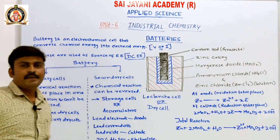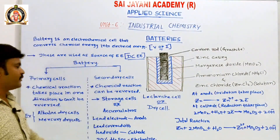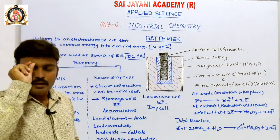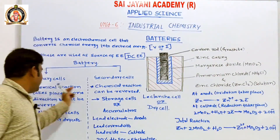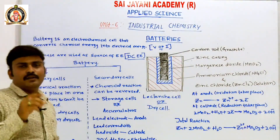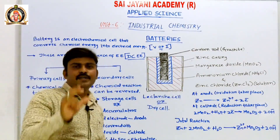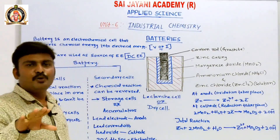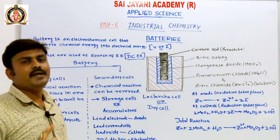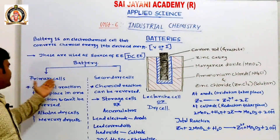Batteries can be classified into primary cells and secondary cells. In primary cells, the chemical reaction takes place in only one direction — meaning discharge only happens. Once the cell is formed, it will be discharged and utilized. After it is discharged completely, it cannot be recharged. That kind of cell is called a primary cell.